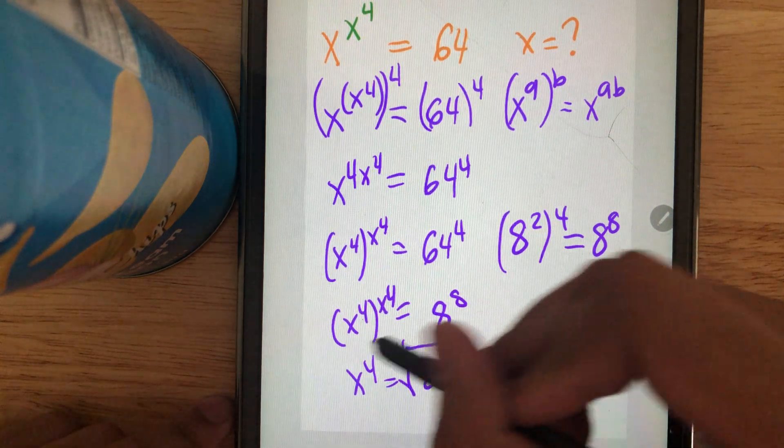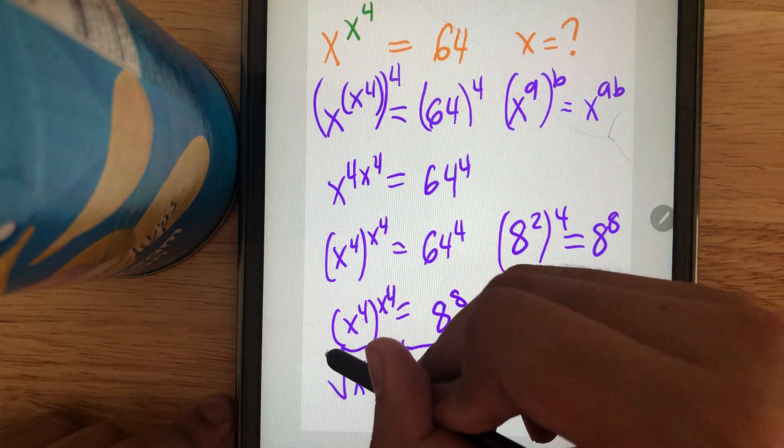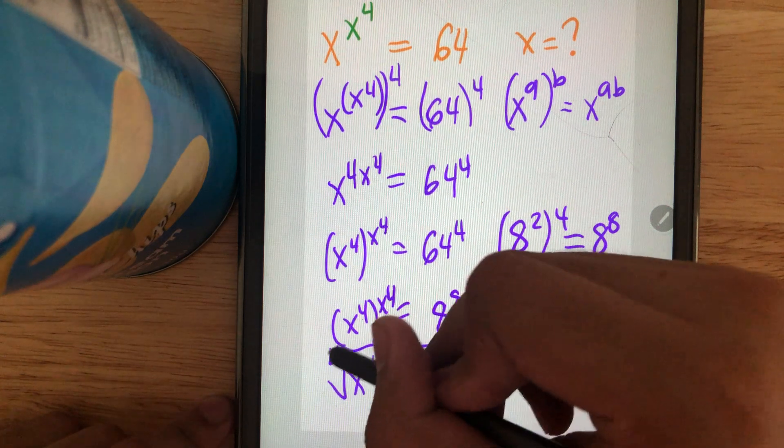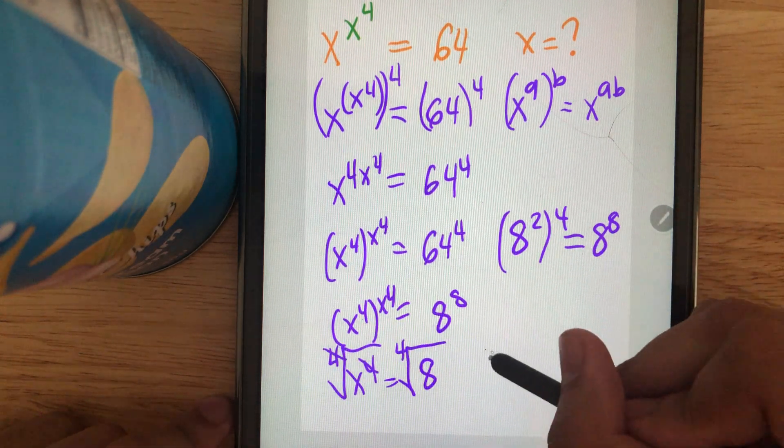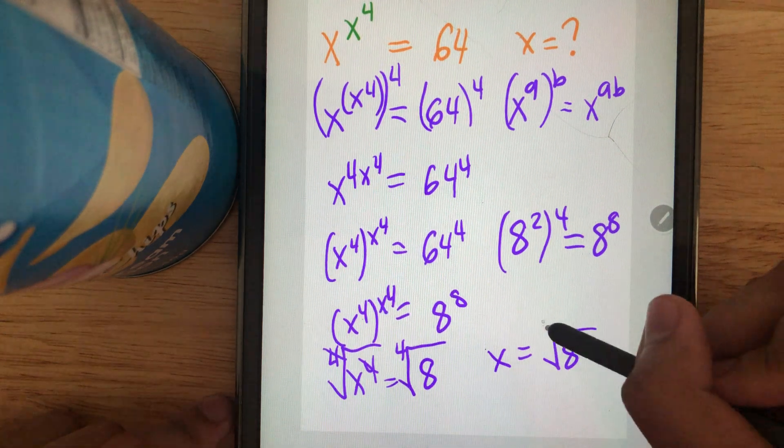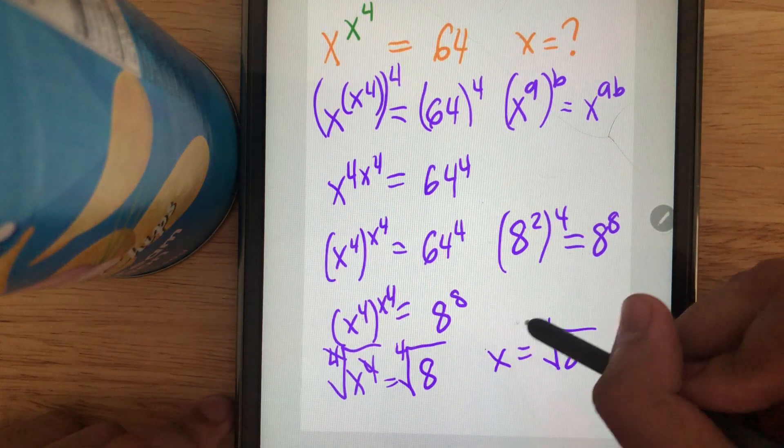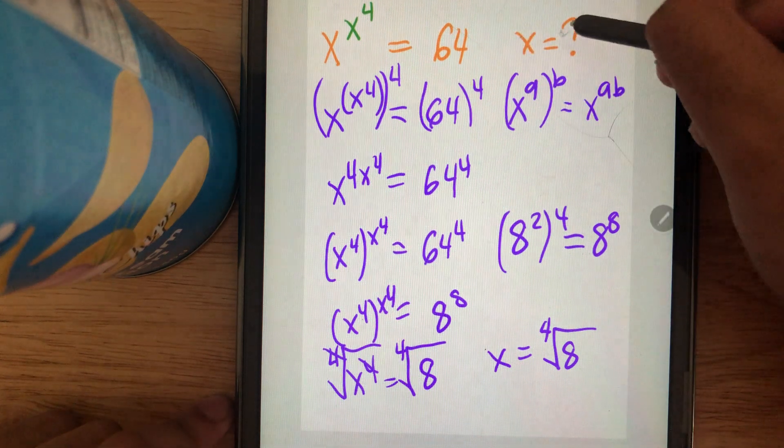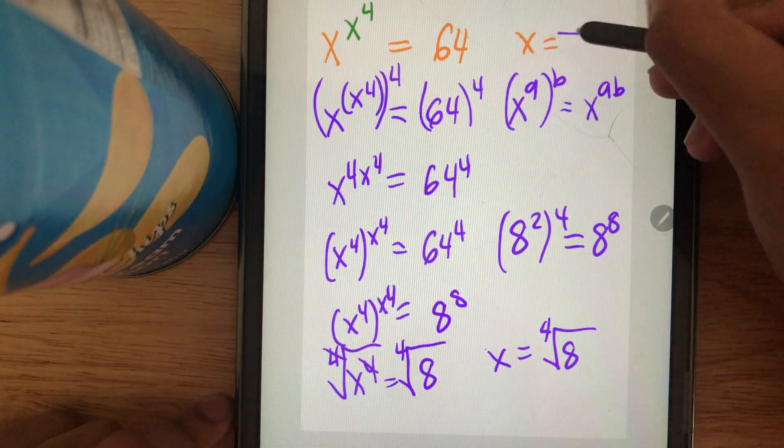Taking the 4th root on both sides, we get x = ∜8. Final answer.